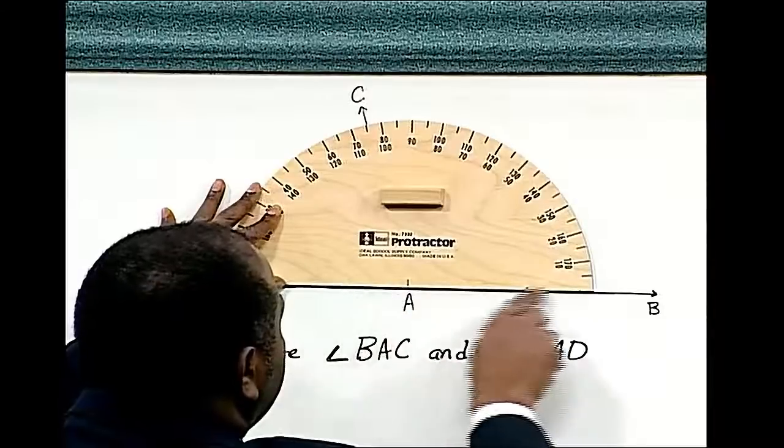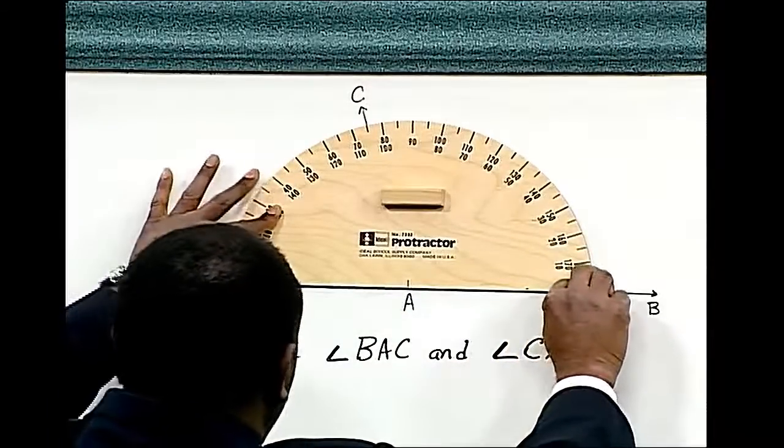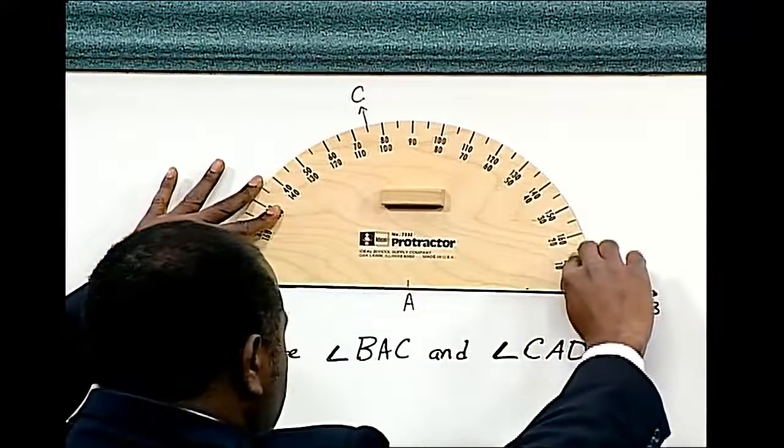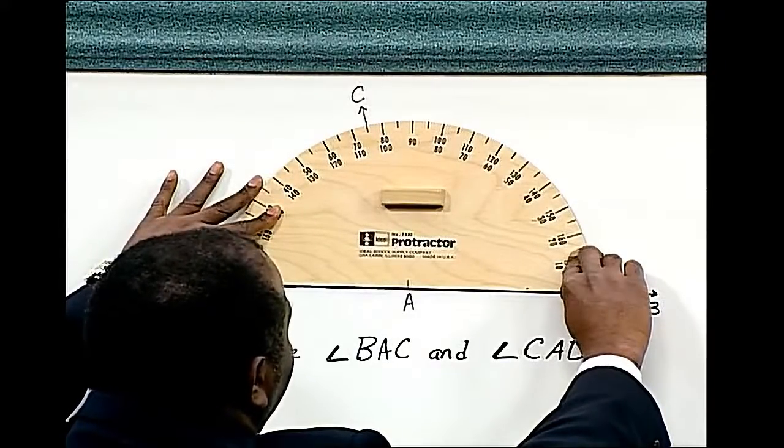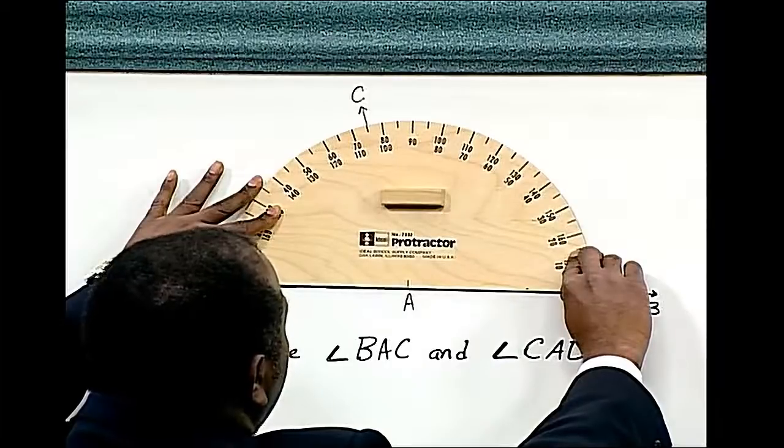We align the base of the protractor on the line segment DAB. Notice that DAB is a straight line, and a straight line measures 180 degrees.